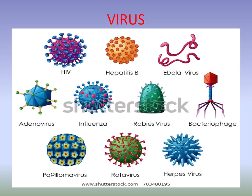Here we are going to know about a very interesting kind of organism — that is virus. Here are some examples; you can see the structures as well: HIV, Hepatitis B, Ebola virus, Adenovirus, Influenza, Rabies virus, Bacteriophage, Papilloma virus, Rotavirus, Herpes virus. You have seen that in our previous slide — that is the classification of microorganisms.